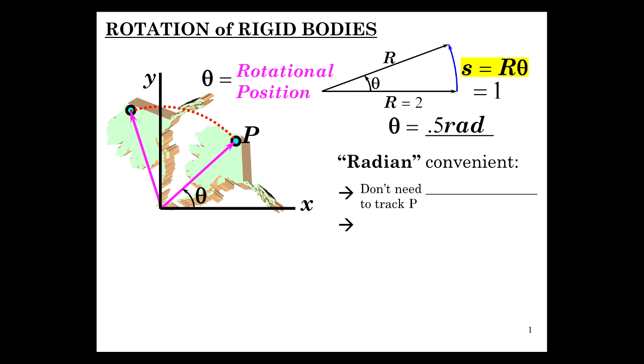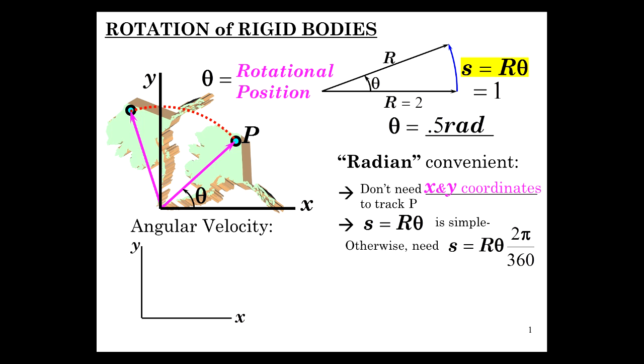Now the radian is convenient. And the reason it's convenient is we don't need to keep track of a complex sequence of X and Y coordinates to track the position. We just need R and theta. All nice. And it's very simple, R and theta. Otherwise, if you don't use R and theta, you would need S in terms of degrees at least. S is equal to R theta in degrees. And then to convert that to radians, you'd have to multiply 2 pi over 360. So there's 2 pi radians in 360 degrees. So that's not quite as simple.